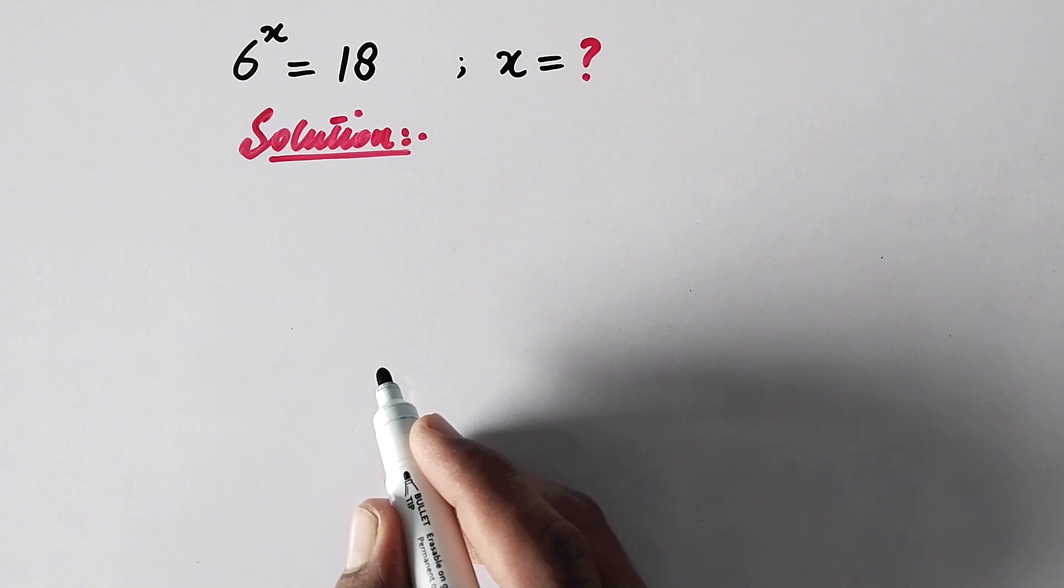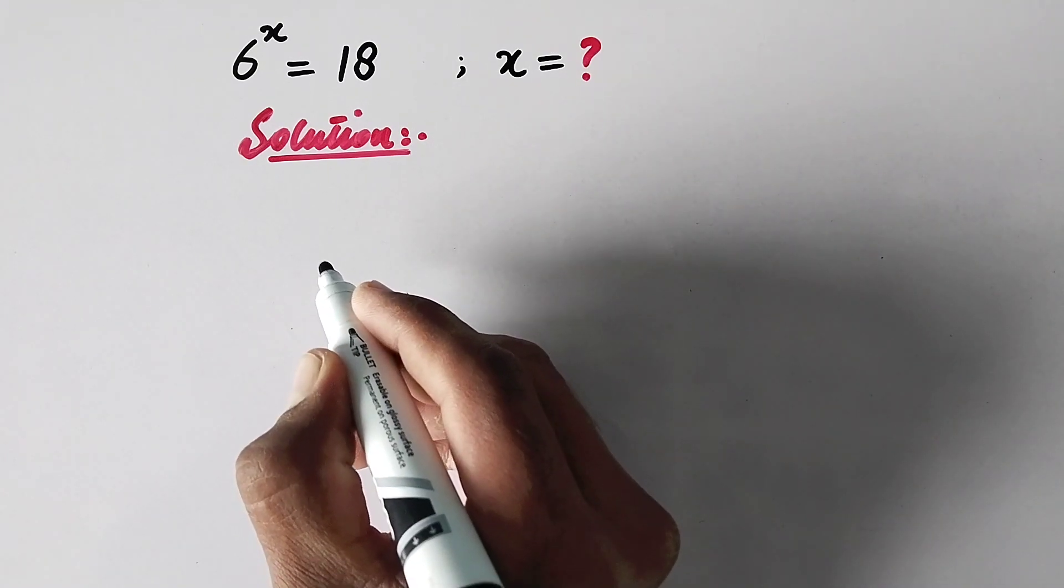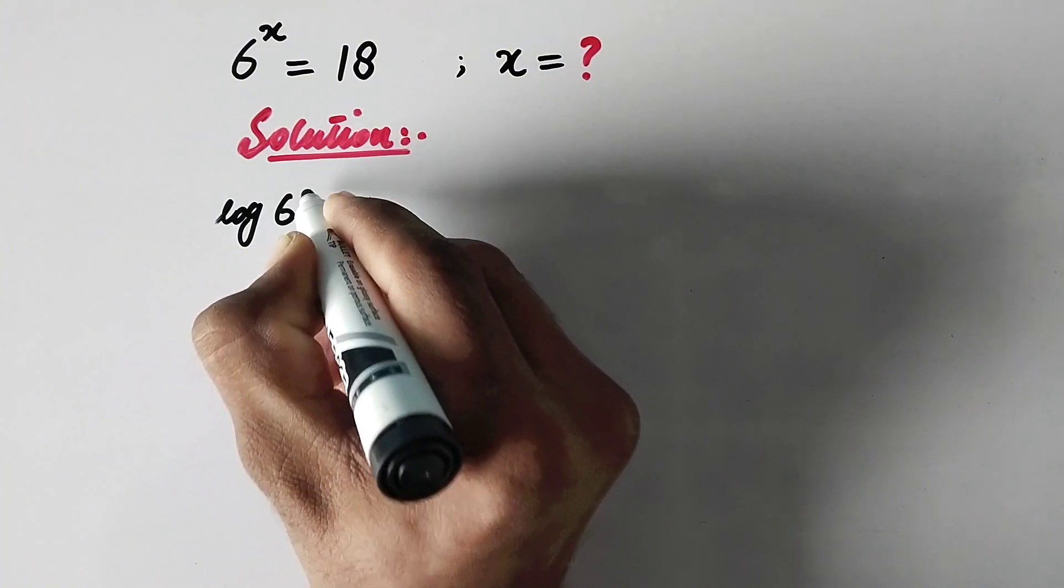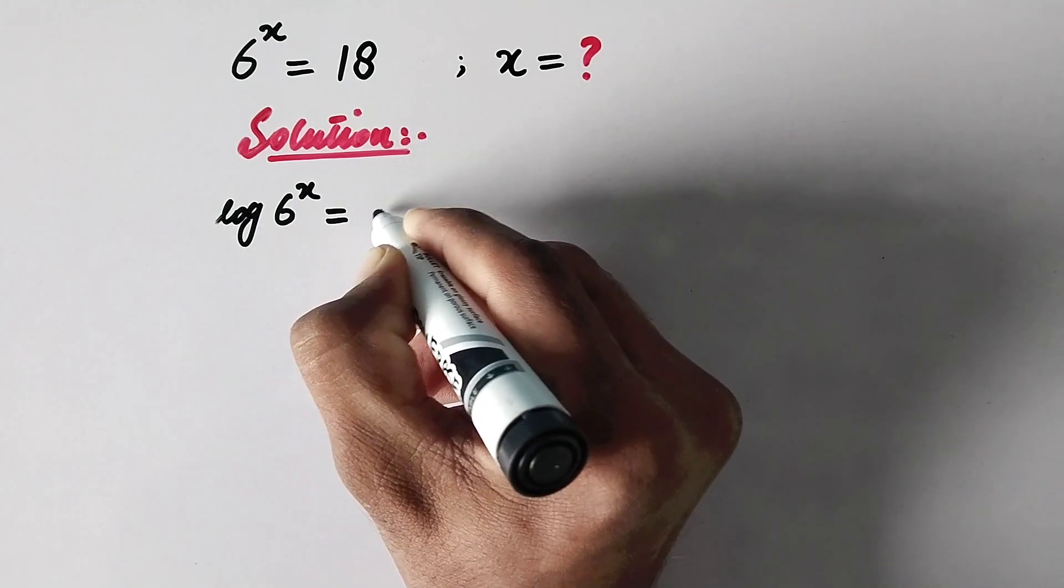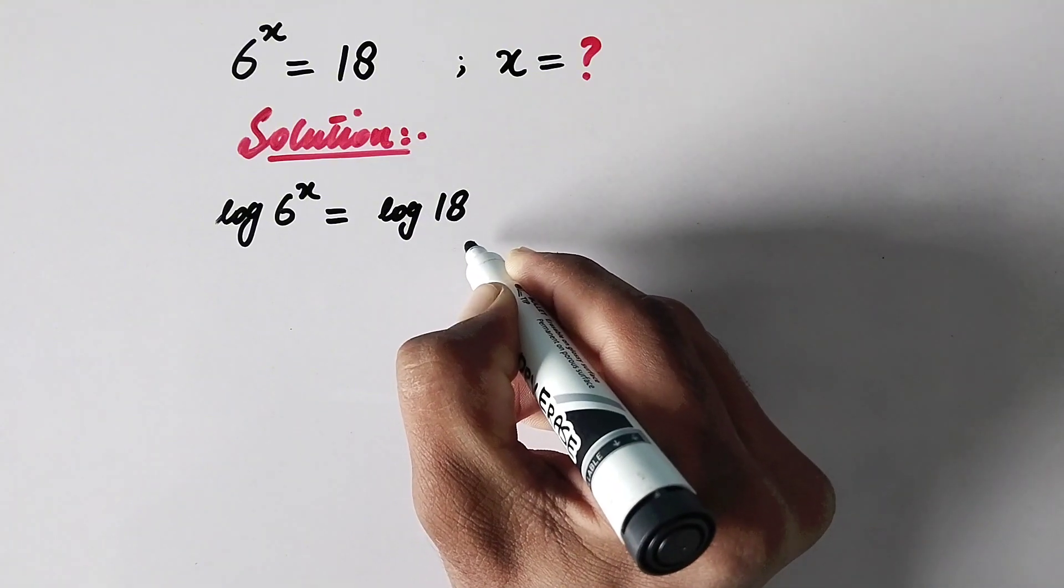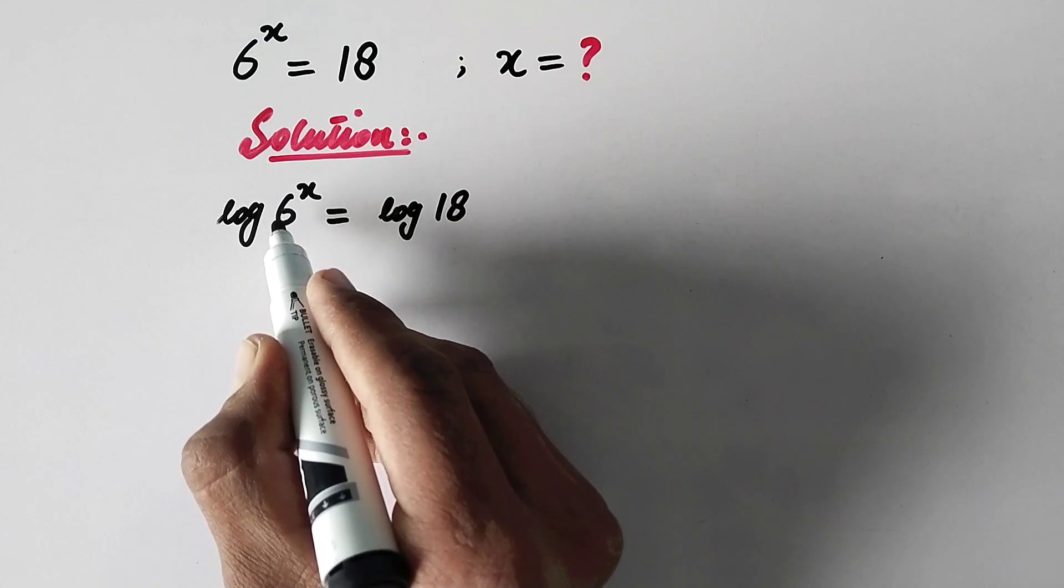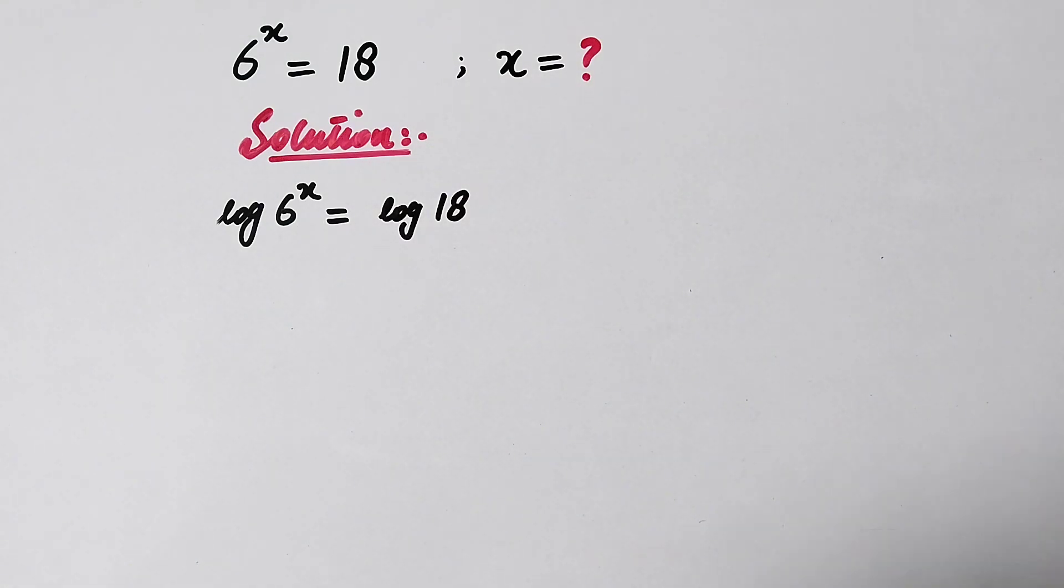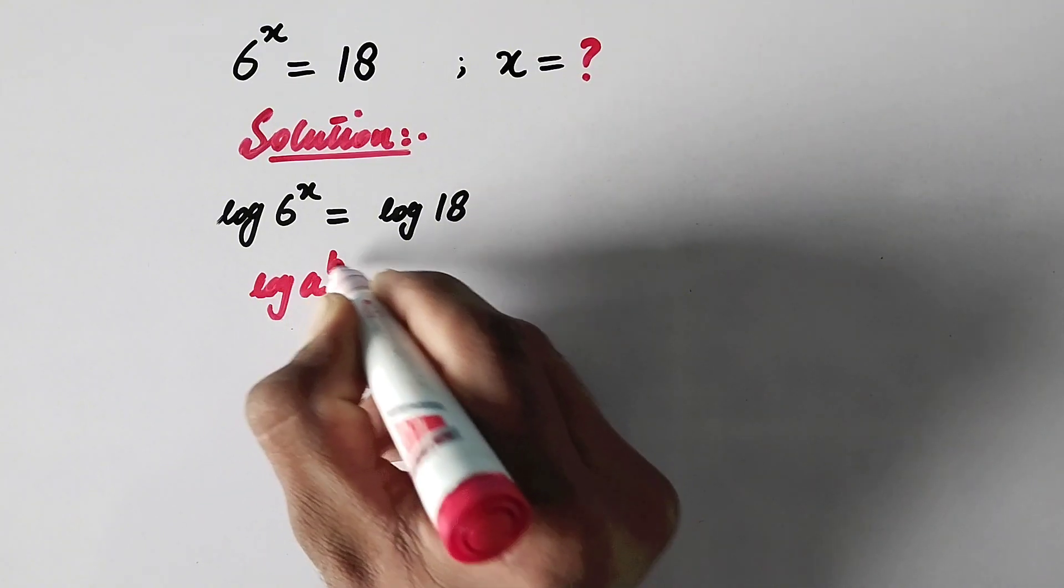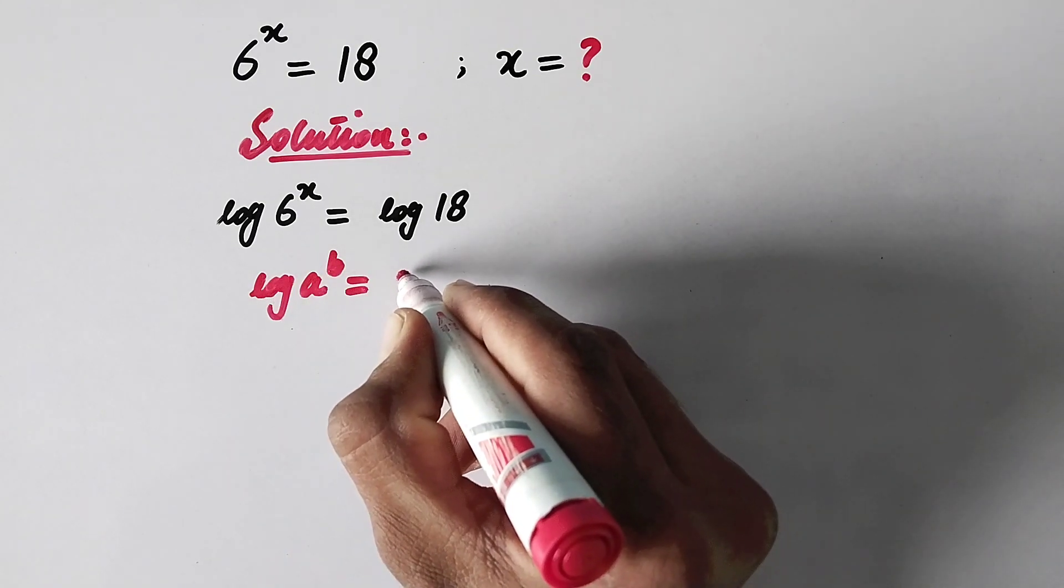In the first step, we will take log on both sides of the equation. Then the equation will be log of 6 to the power x is equal to log of 18. Now we can apply a property of log. As we know that log of a to power b is equal to b times log of a.